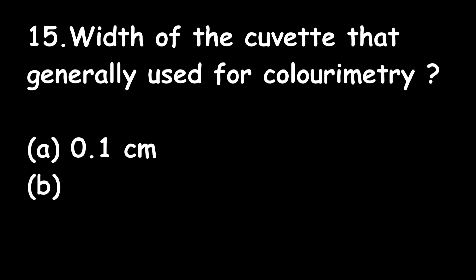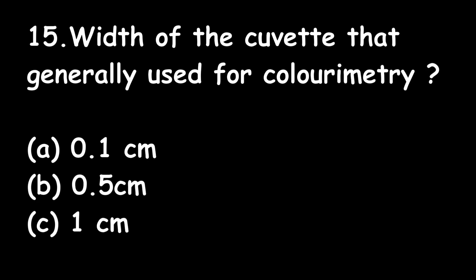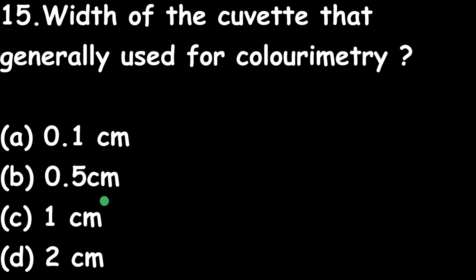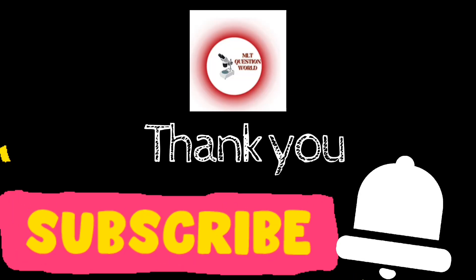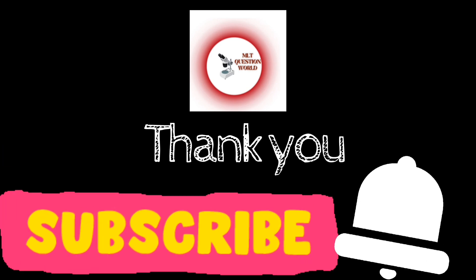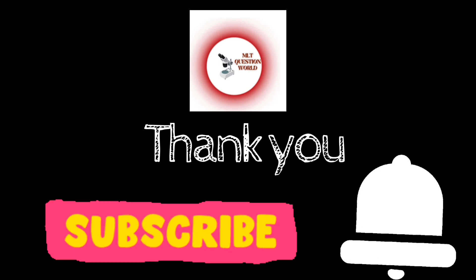Question 15: Width of the cuvette generally used for colorimetry — Option A: 0.1 cm; Option B: 0.5 cm; Option C: 1 cm; Option D: 2 cm. The right answer is Option C — 1 centimeter. The width of the cuvette generally used for colorimetry is 1 centimeter. Today we are winding up here. You can watch previous videos from the playlist. Subscribe the channel and turn on the bell button for new updates. Thank you.